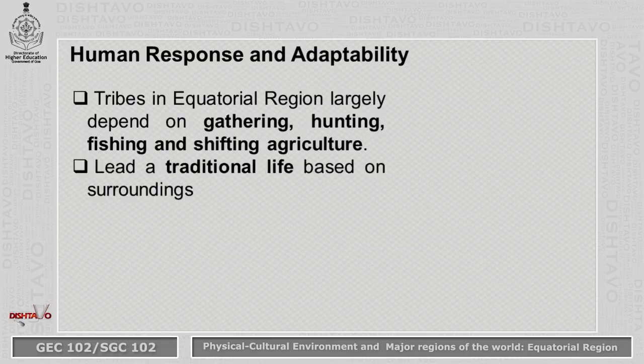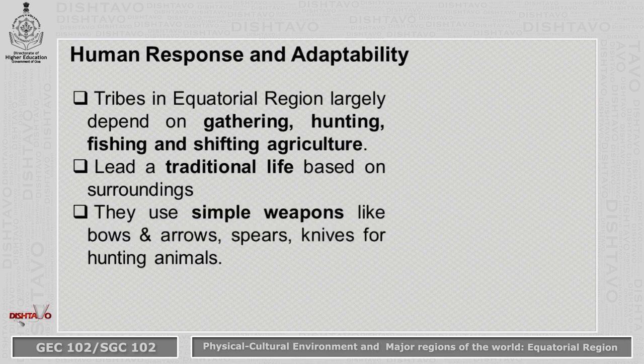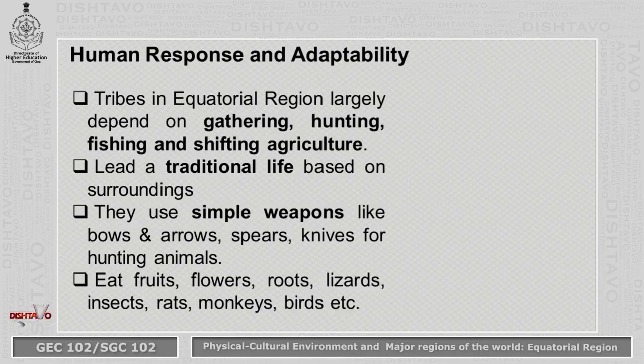They lead a traditional life based on prevailing environmental conditions. They use simple weapons like bows, arrows, spears, and knives for hunting animals. They eat whatever is available in the forest, such as fruits, flowers, roots, berries, lizards, insects, rats, monkeys, and birds.